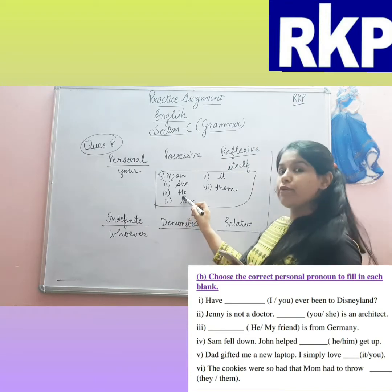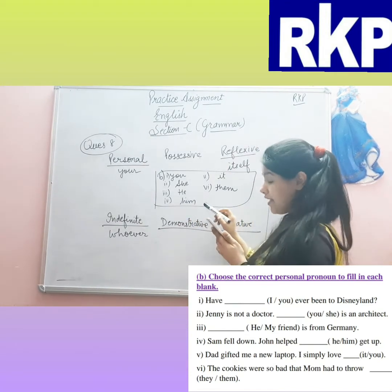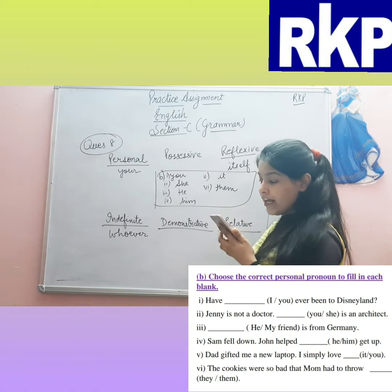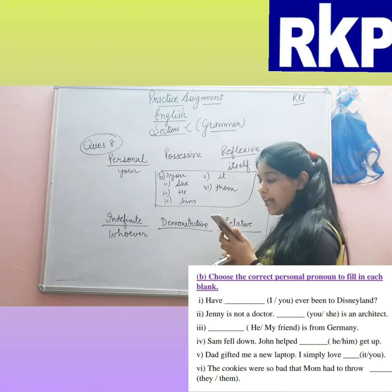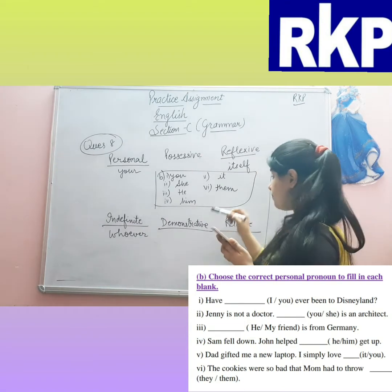Why 'he'? Because 'friend' is not a pronoun. Next: 'Sam fell down. John helped ___ get up.' — Him.